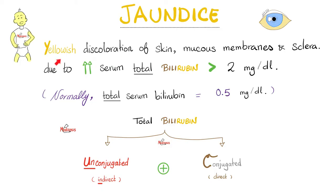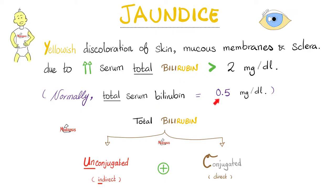Here's the definition of jaundice: yellowish discoloration of the skin, mucous membrane, and sclera of the eye, due to an increase in serum total bilirubin above 2 mg per deciliter, or 2 mg per 100 ml of blood. So the normal is just half of that — below 2. More than 2 mg/dL is jaundice.